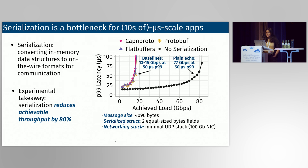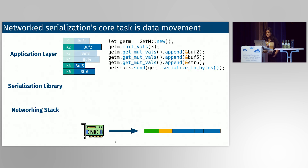So what's causing all this throughput loss? Let's take a closer look. We have these applications that have some data in memory, and they eventually want this memory to end up in some contiguous format prepended by some headers in NIC memory.